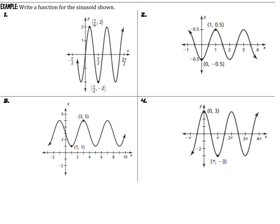Looking at number one, the first thing I want to do is identify the center, which looks like the x-axis. I can confirm this because I go up and down the same distance from it to get my amplitude. I'm going up 2 and down negative 2, so the center — K or D — is 0, and the amplitude is 2.